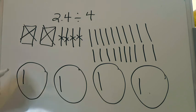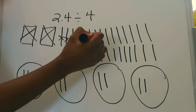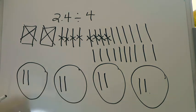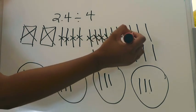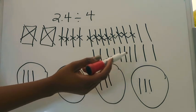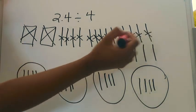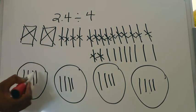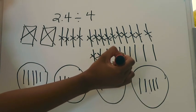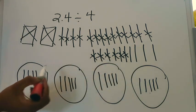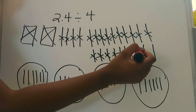I'll distribute the tenths one at a time, placing one in each of the four groups and crossing them out as I go. I keep going in rounds of four until all pieces have been equally distributed among the four groups.